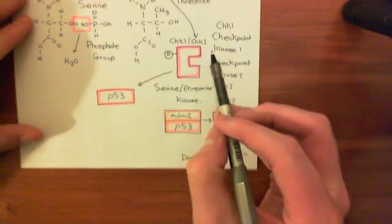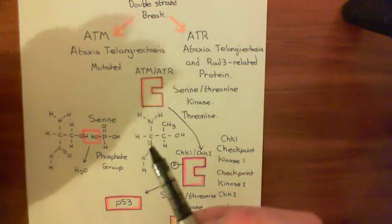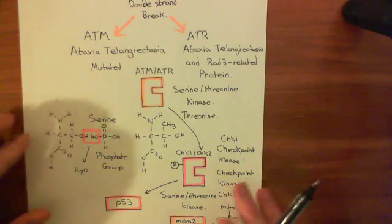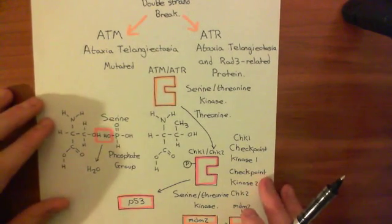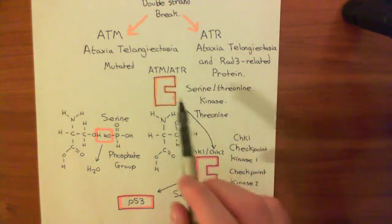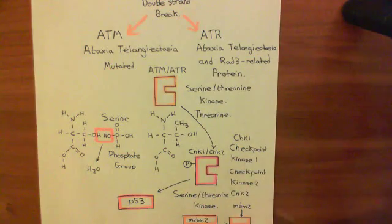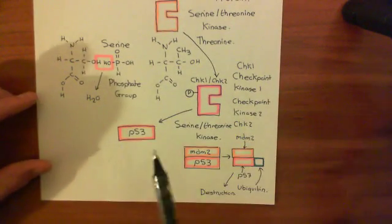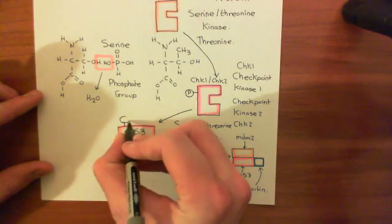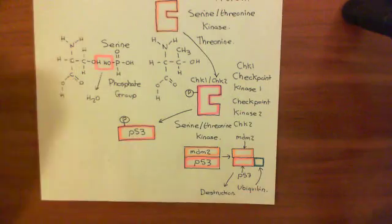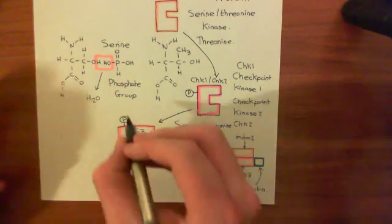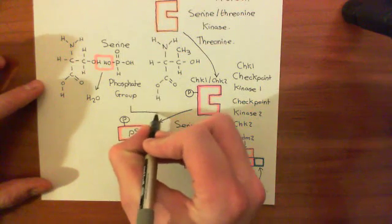When we've had DNA damage, we want P53 activity to begin. We want our guardian of the genome to come to our rescue. We've seen that it activates these ATM-ATR enzymes, which then activate the CHK1 and CHK2 enzyme. Now the CHK1/CHK2 enzyme is going to stick a phosphate group on the side of P53. When you stick that phosphate group on P53, MDM2 can no longer interact with P53.